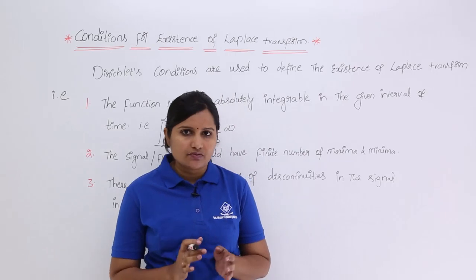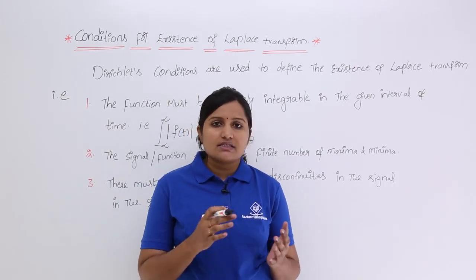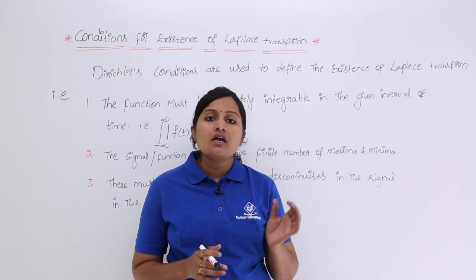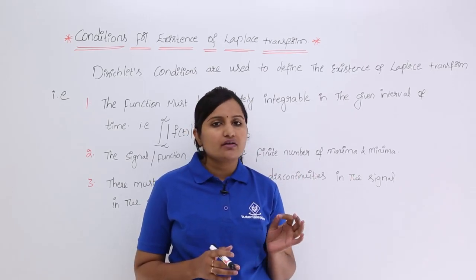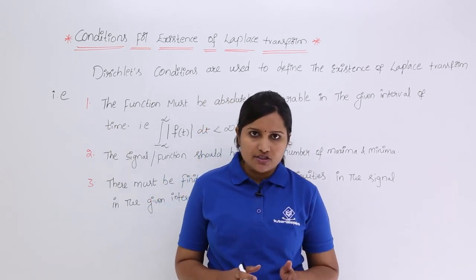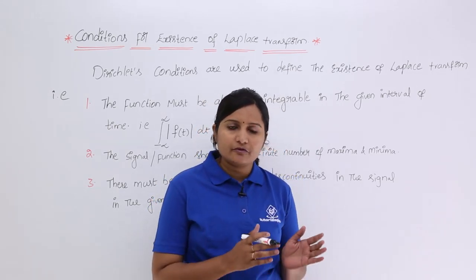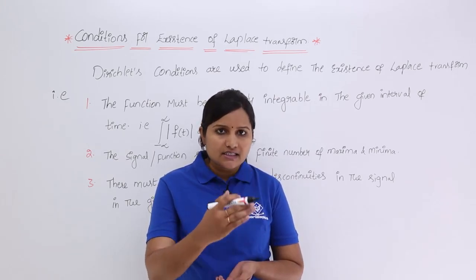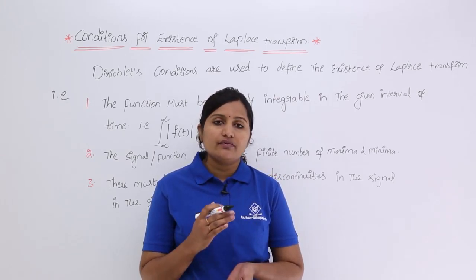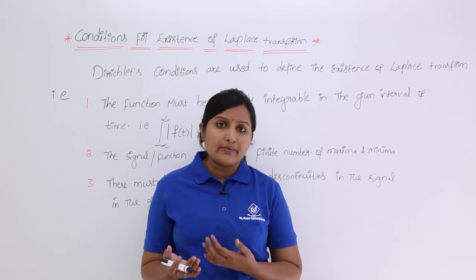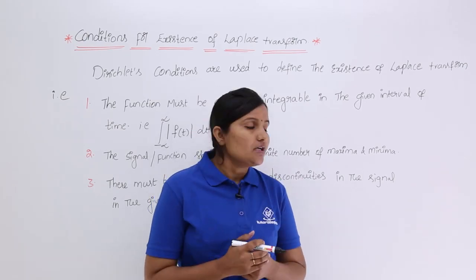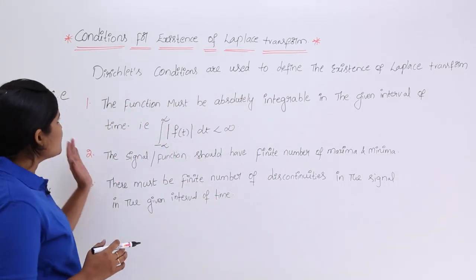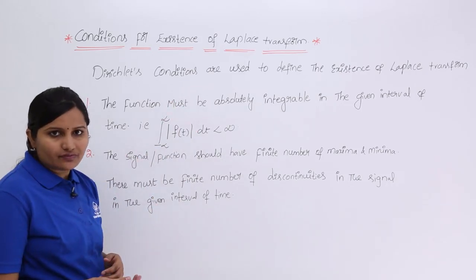We discussed the same topic earlier for Fourier transforms — conditions for existence of Fourier transform. Those conditions are called Dirichlet conditions. The same three Dirichlet conditions apply here: we will check if a signal satisfies those conditions to determine whether Laplace transform is applicable for that signal. These three Dirichlet conditions define the existence of Laplace transform, similar to Fourier.